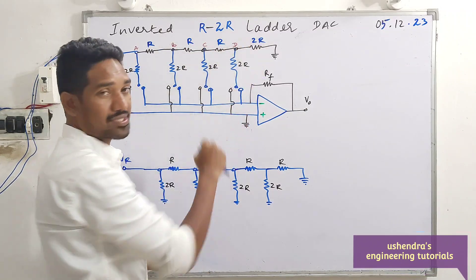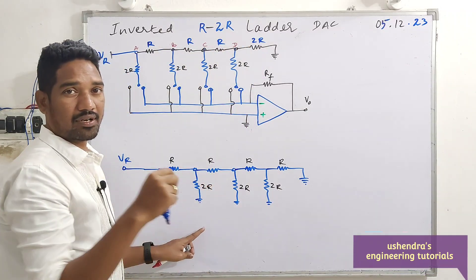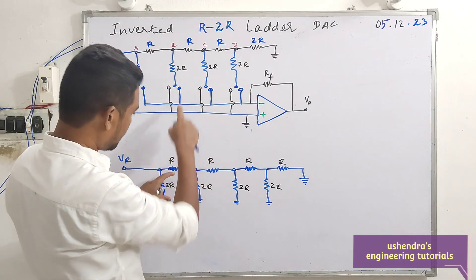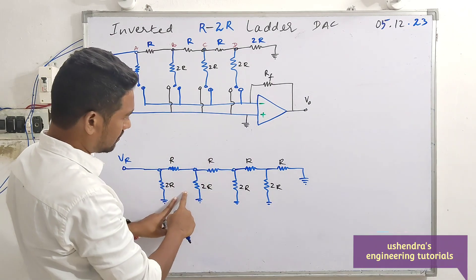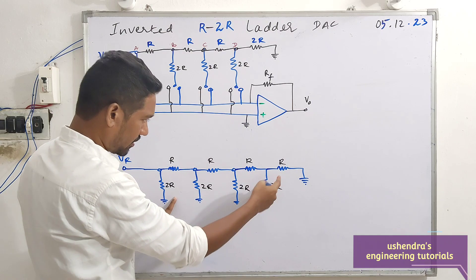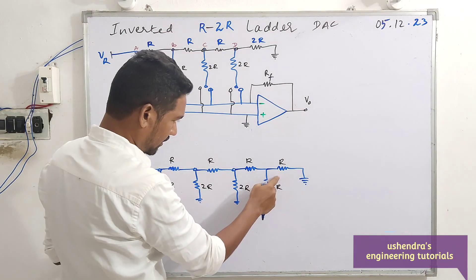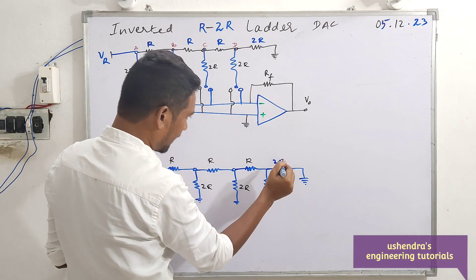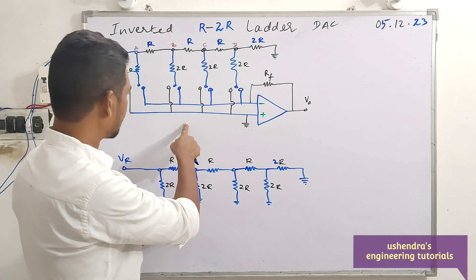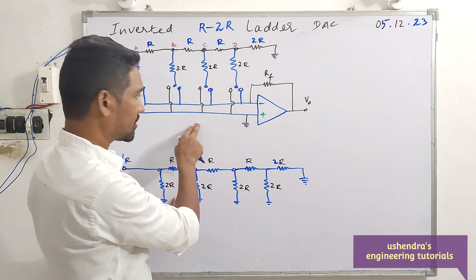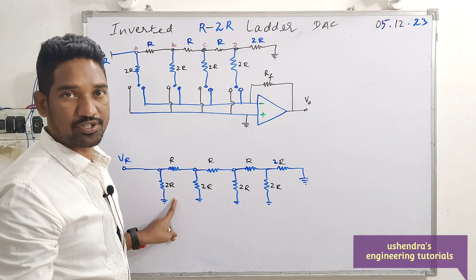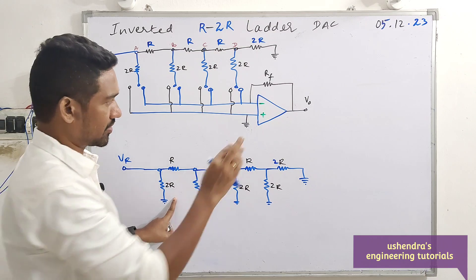Inverted R2R ladder DAC. It would be more convenient to understand the working of the circuit if you start with the ladder network. The tail end resistance is always 2R, and the circuit I have constructed is for a 4-bit digital input and the corresponding analog output.